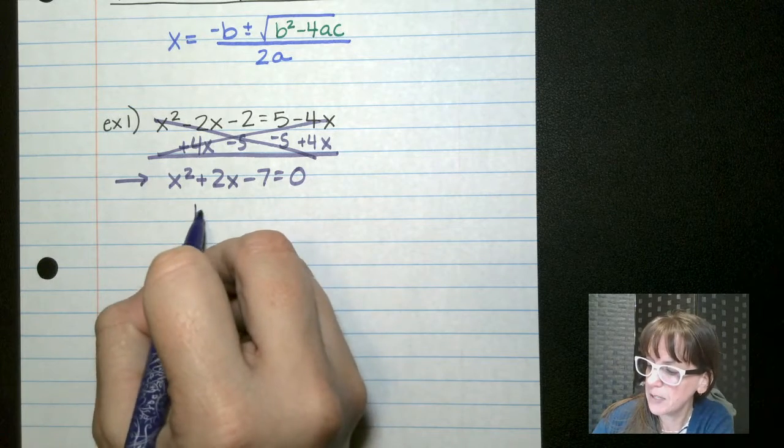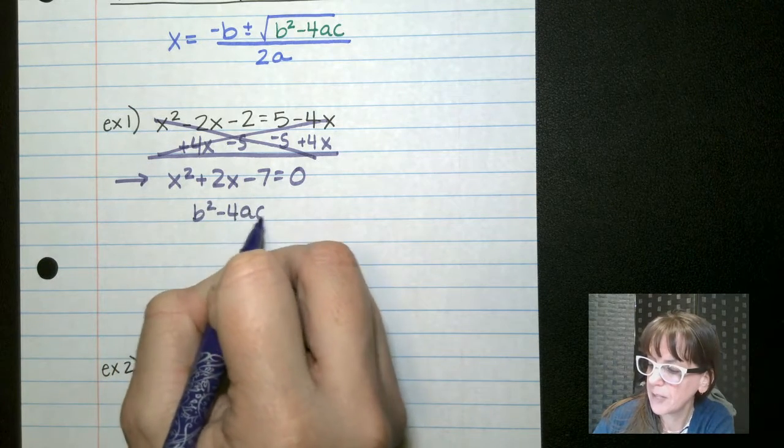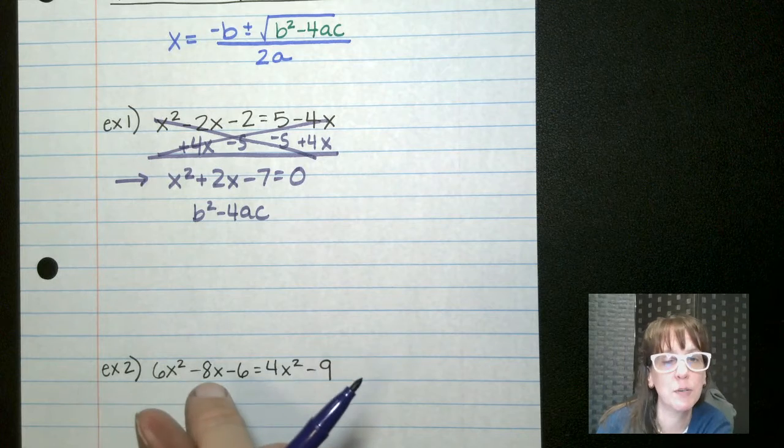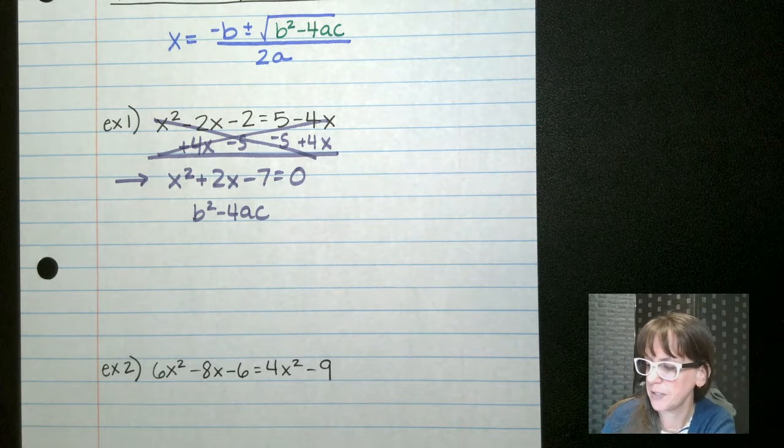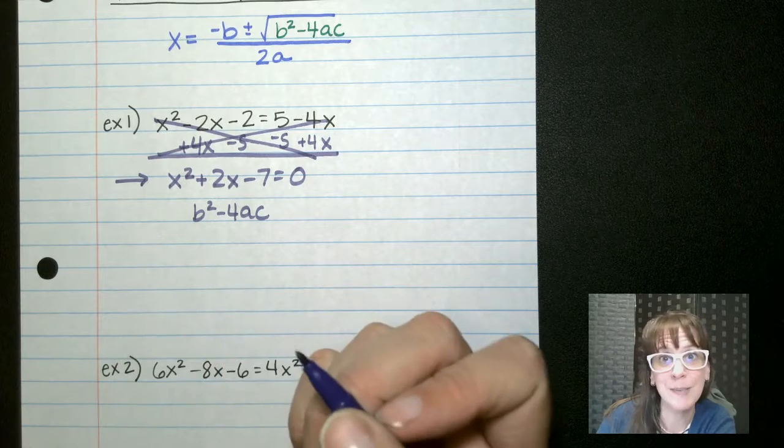B squared minus 4ac. Another good reason is if it's a no solution answer, if you start with your discriminant, you don't have to write all that other stuff down. So I'm lazy. I like to do things the easiest way possible.